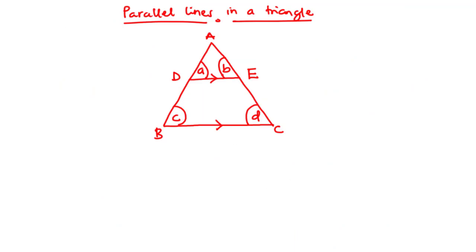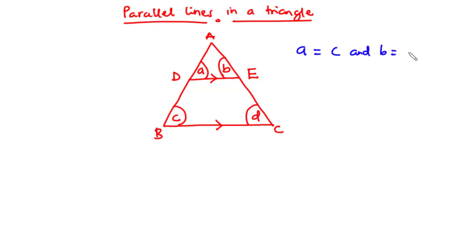Now let's discuss the properties of parallel lines in a triangle. Considering triangle ABC with line DE inside it, parallel to side BC. From the angle properties of parallel lines, angle A equals angle C and angle B equals angle D. Angle A and C are corresponding angles, and angle B and D are also corresponding angles.